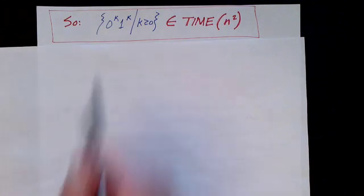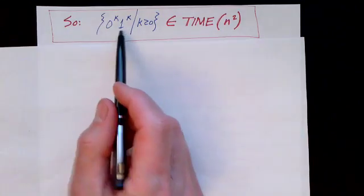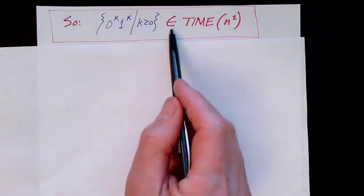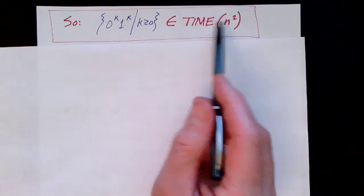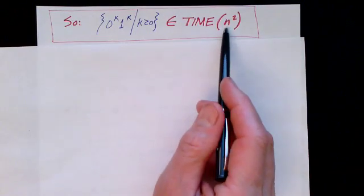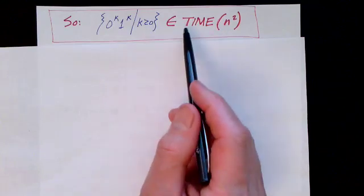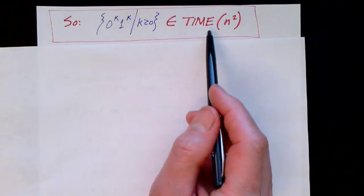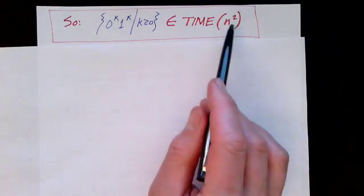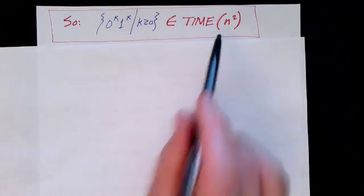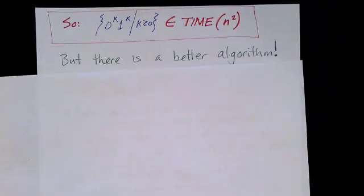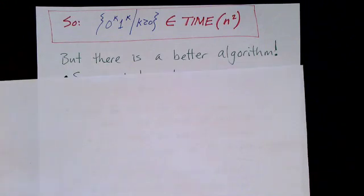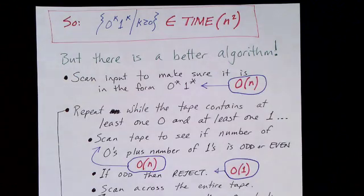Here's our language again. By giving that algorithm, we've just shown that this problem is a member of the set of N² time problems — it's in this class because we provided an algorithm that runs in order N² time. But it turns out there's another algorithm, a better algorithm in the sense that it's faster, to solve the same problem. Let's take a look at this algorithm and analyze it.